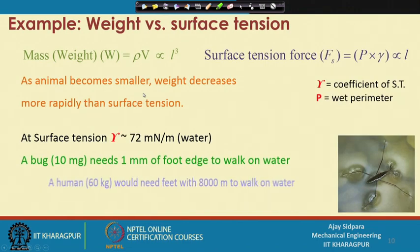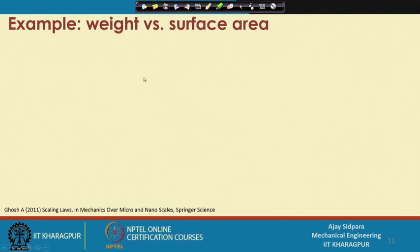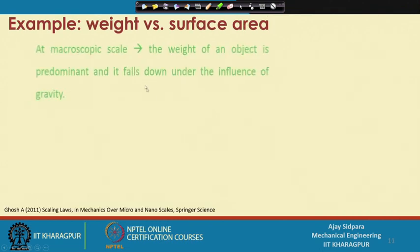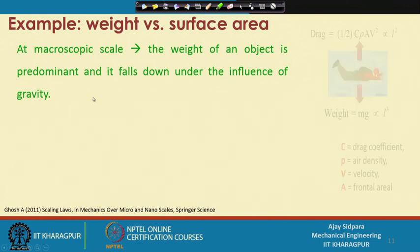In the last class we saw the example of what happens when surface tension becomes more significant compared to weight at different scales. Now there is one more point related to the weight scale: at the macroscopic scale, the weight of an object is predominant and it falls down under the influence of gravity.